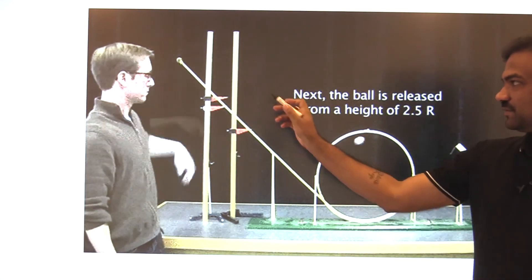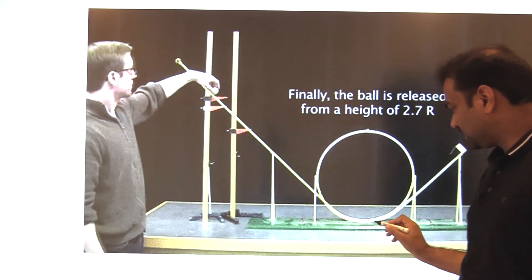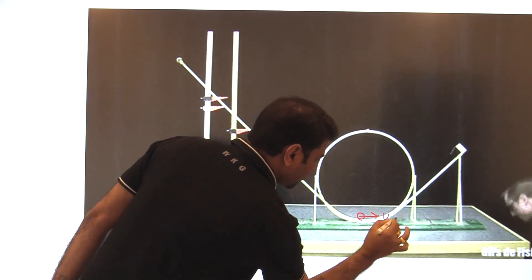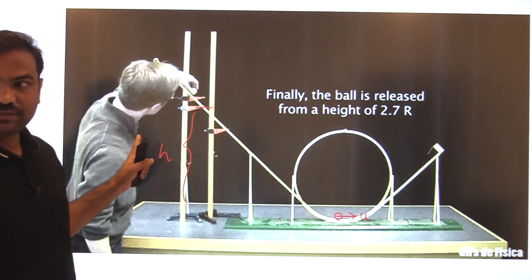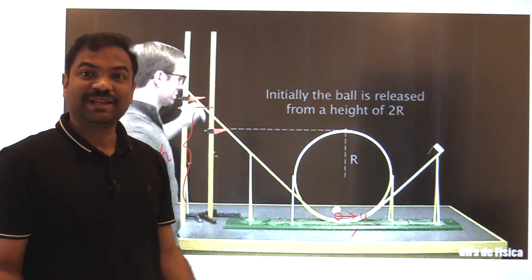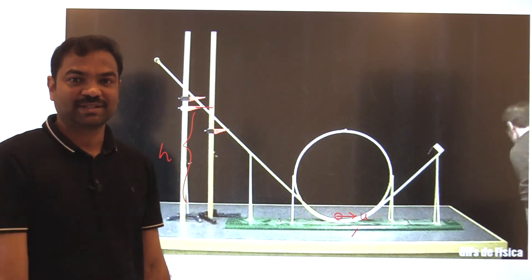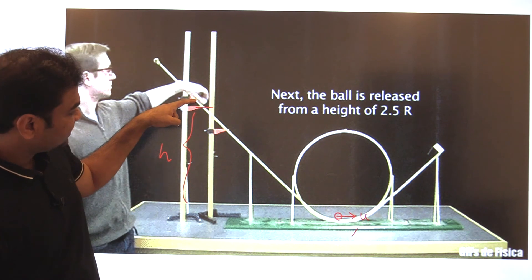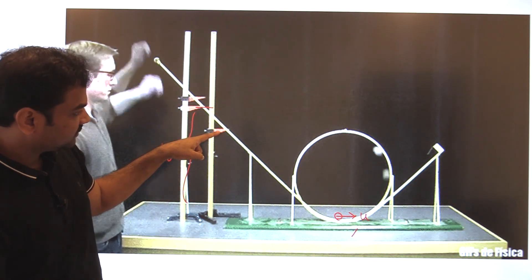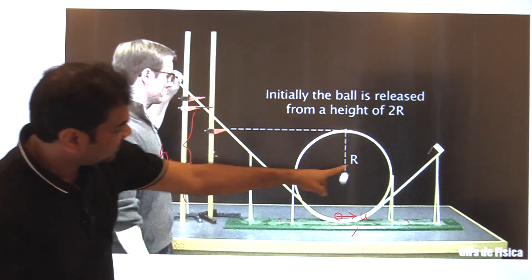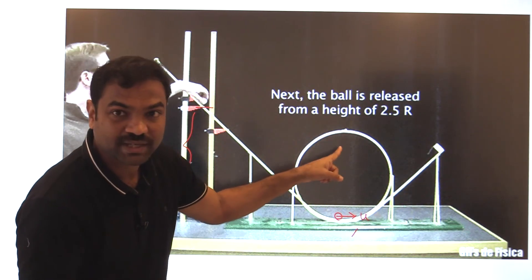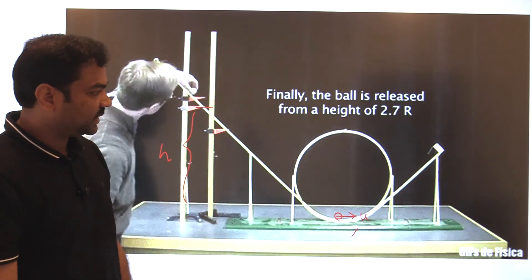In looping the loop, releasing from greater height increases the velocity at the bottommost point. As height increases, u increases. If u > √(5gr), it completes the vertical circle. If u < √(5gr), it won't complete the circle. You can see: when released from sufficient height, the ball completes the vertical circle. When released from lesser height, it leaves the path after turning more than 90° but before 180°, which is exactly the region we predicted.